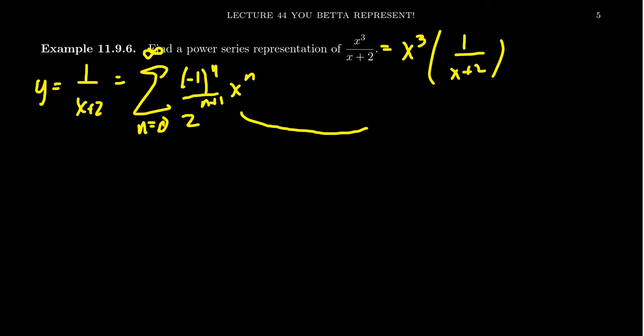So if we insert this power series representation into here, then what we can see is that x³/(x+2) is going to equal just x³ times the thing from above. Bring it down here.